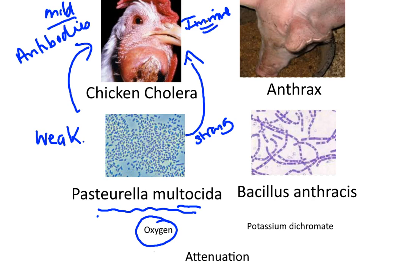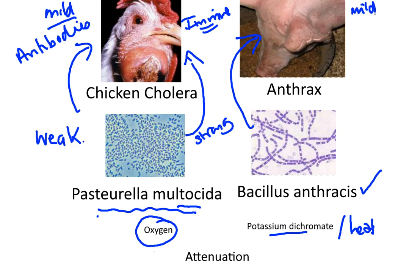We would say that the chicken had become immune. In a similar experiment, Pasteur used potassium dichromate, and in fact heat, to weaken the Bacillus anthracis, so that when injected into pigs, this did not cause the disease, or at least only made a mild version of the disease. At this time, the pig's immune system produced antibodies, and so when exposed to the strong form of anthrax, the pig survived and did not develop the disease — we would say it had become immune.